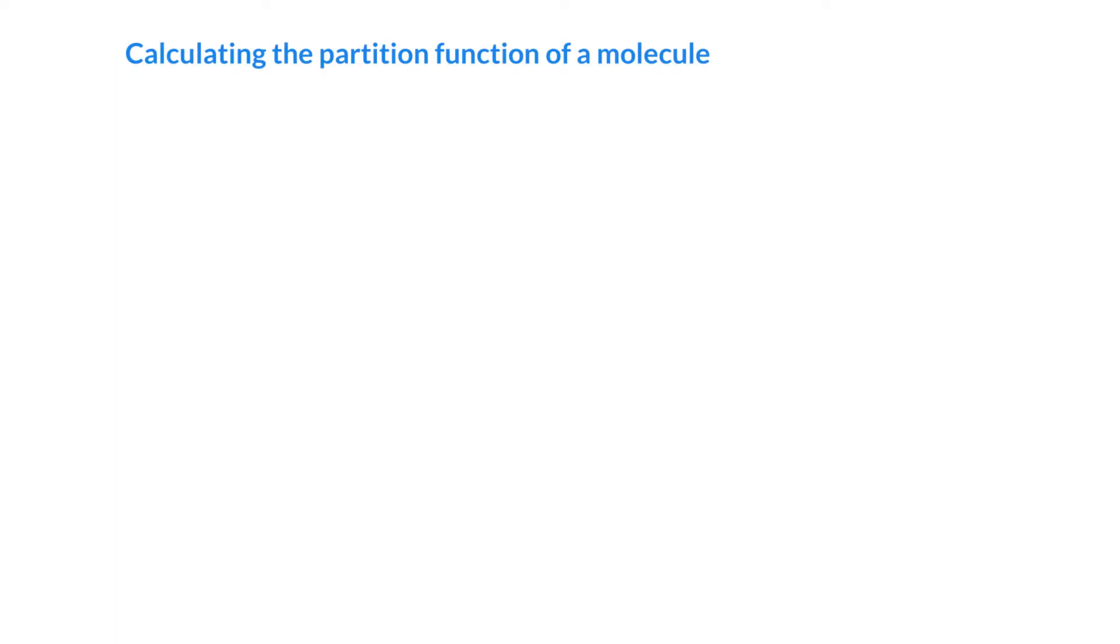To calculate the partition function for a molecule, we just have to take into account all the different places that energy can be stored in a molecule. And we've seen that the energy can be stored in translation, in rotational modes, in vibrational modes, and in electronic modes. Or at least those are the only four that we're going to look at in this course.